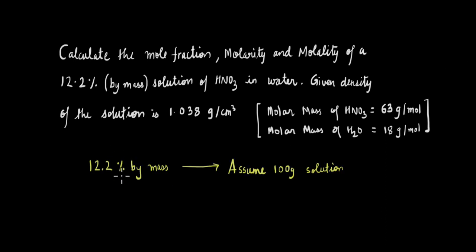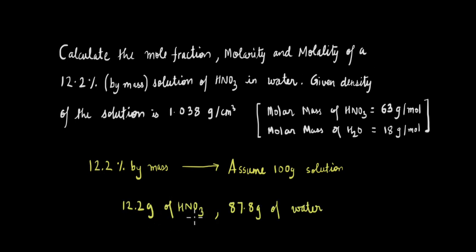Since we are given that the mass percent is 12.2, let's assume that we have taken 100 grams of the solution. That means 12.2 grams is going to be the solute, that is HNO3. And the mass of the solvent is going to be 100 minus the mass of the solute, which gives us 87.8 grams. Now we have the mass of the solute and the mass of the solvent.